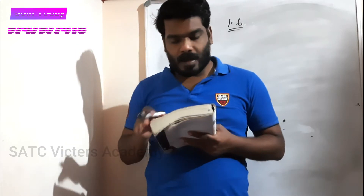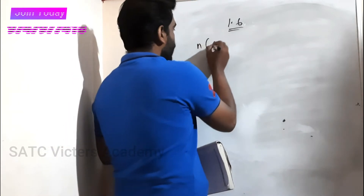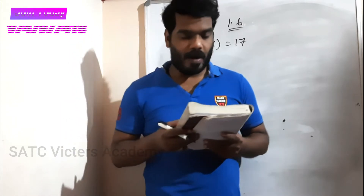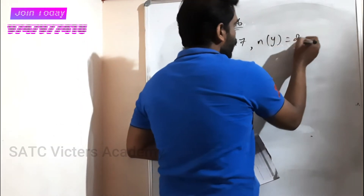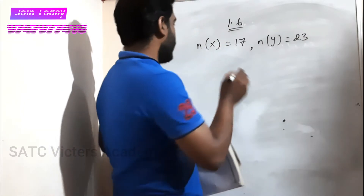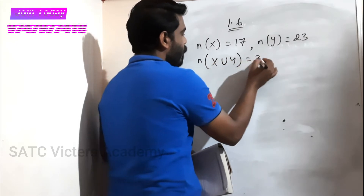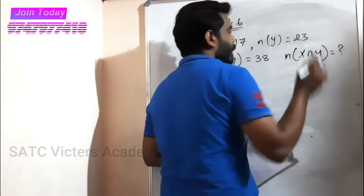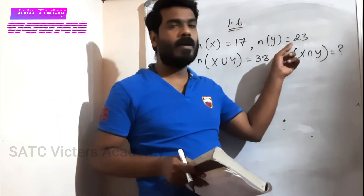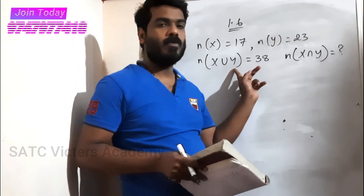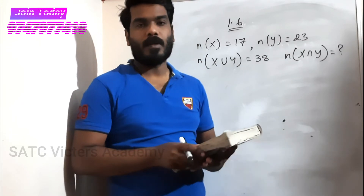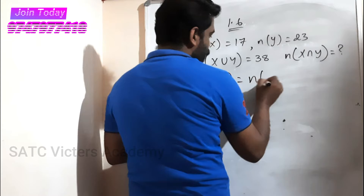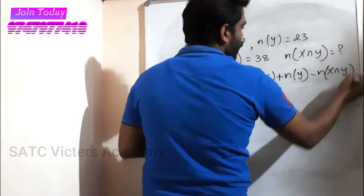Question 1: If X and Y are two sets such that n(X) is equal to 17, n(Y) is equal to 23, and n(X∪Y) is equal to 38, find n(X∩Y). The formula is: n(X∪Y) is equal to n(X) plus n(Y) minus n(X∩Y).